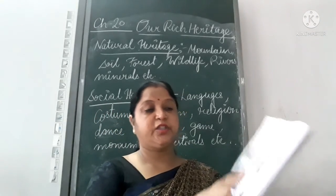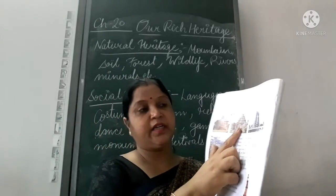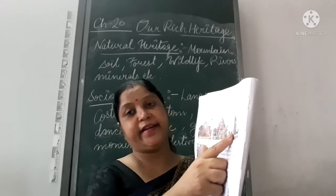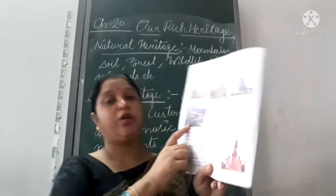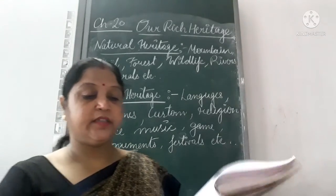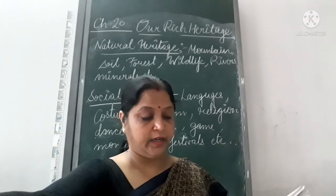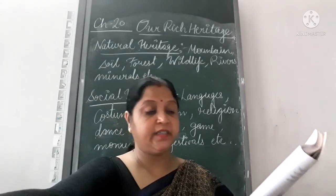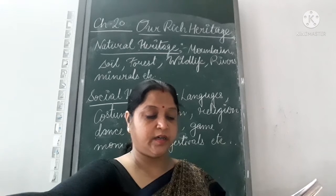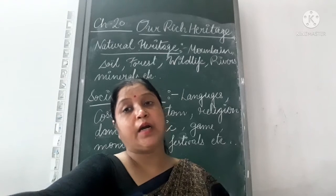Here is the picture of the Konark temple, which is related to the sun god. And the Meenakshi temple in Madurai is also very famous for its architecture. The Kailash temple at Ellora is very unique — it was carved out of a single rock.